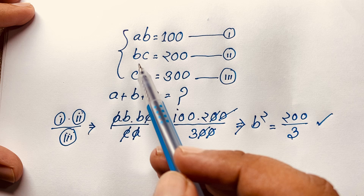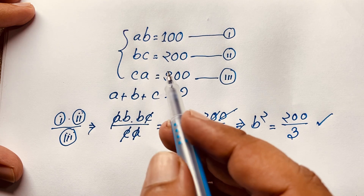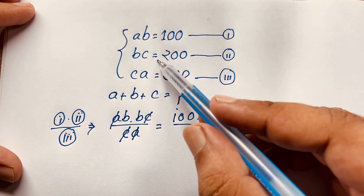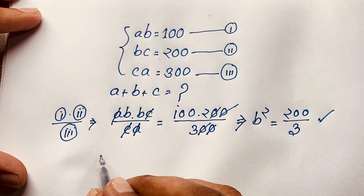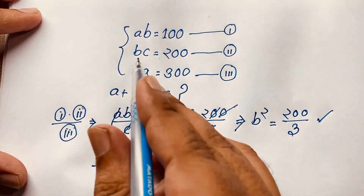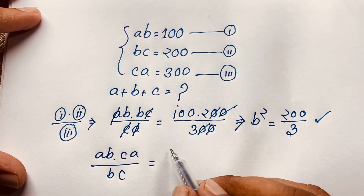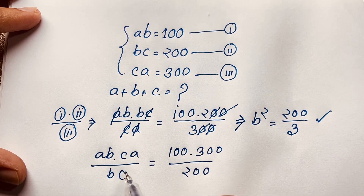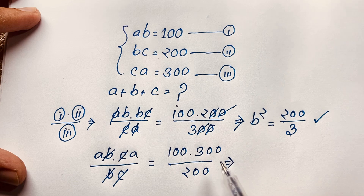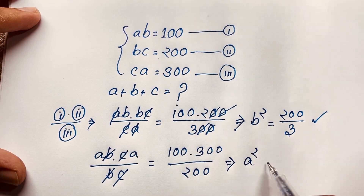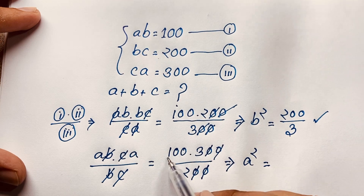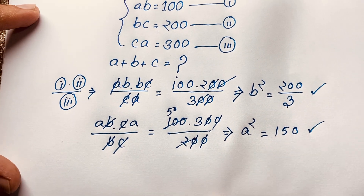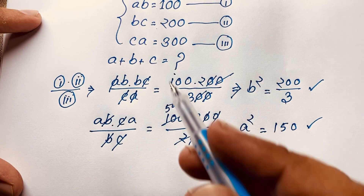Now I multiply the first equation and the third equation and divide by the second equation. So you can see it will be AB times CA over BC, which equals 100 times 300 over 200. This C cancels, this B cancels, giving A squared. 100 divided by 2 is 50, and 50 times 3 is 150. So we find A squared is equal to 150.